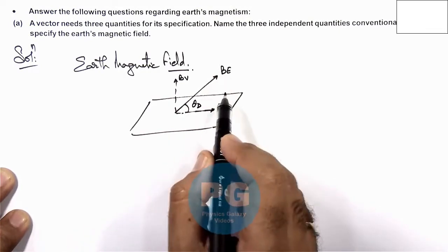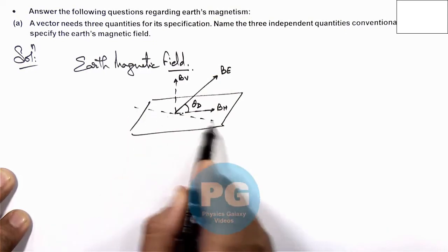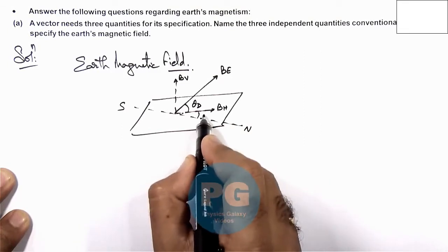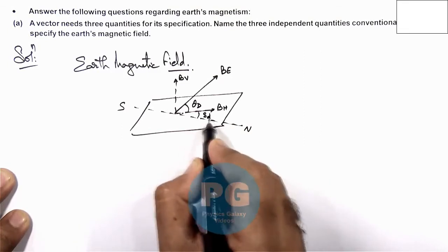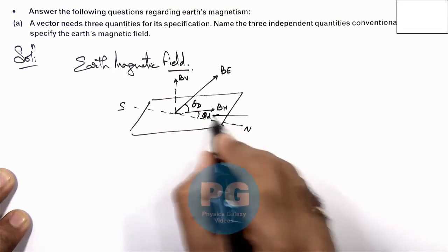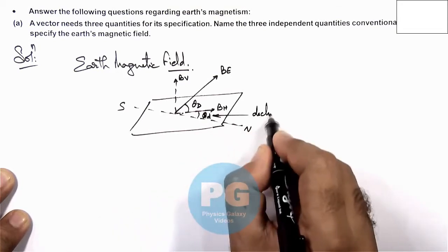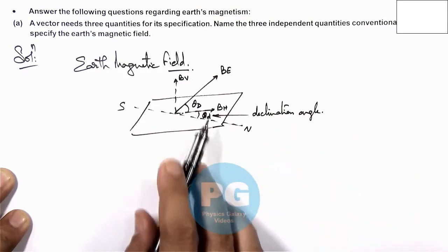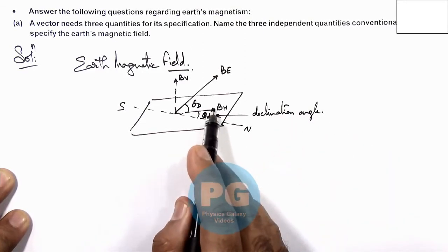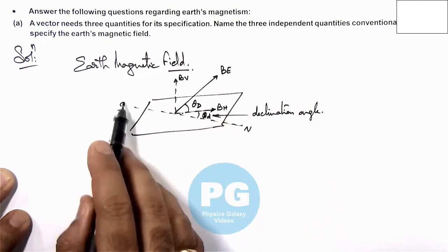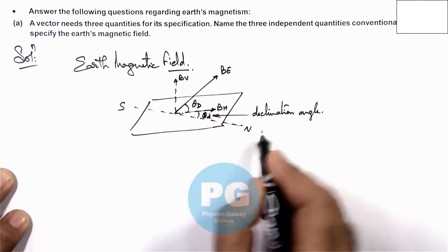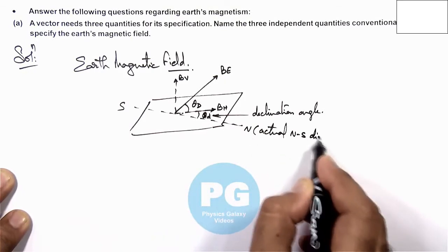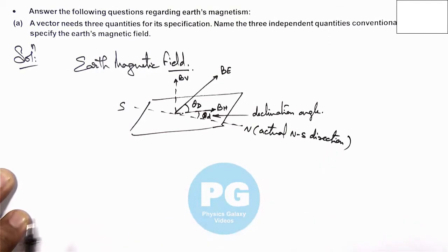Along with this there is one more angle which is important to be classified — the declination angle, which we define as delta-d or theta-d, which is the inclination angle. The declination angle is the angle which is between the horizontal component of earth's magnetic field and the actual north-south geographical direction on earth's surface at any point.